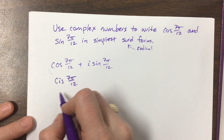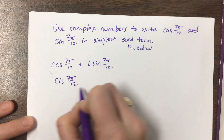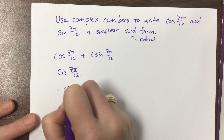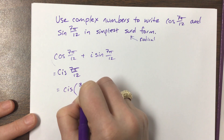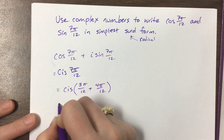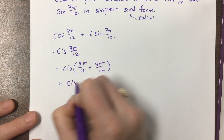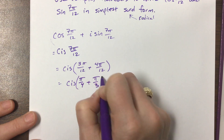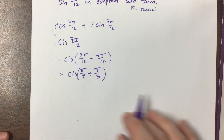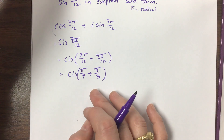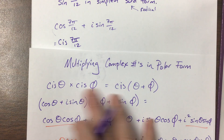What we can do is break this apart and say that cis of 7π/12 equals cis of (3π/12 + 4π/12), which simplifies to cis of (π/4 + π/3). Now we're working with this going backwards — we're here and we want to work our way back.